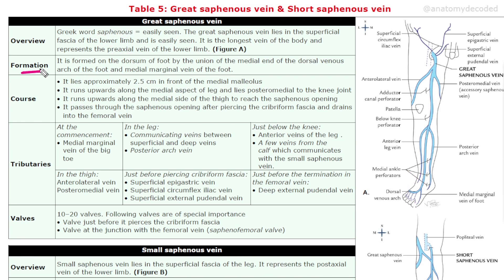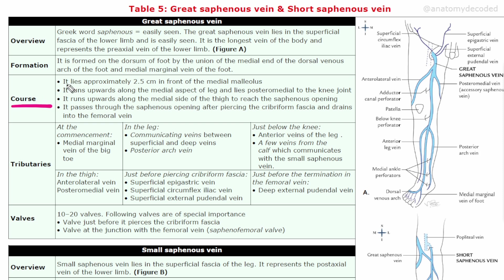The great saphenous vein is formed at the dorsum of the foot by the union of the medial end of the dorsal venous arch and the medial marginal vein of the foot, as seen in this diagram. Its course: it lies approximately 2.5 centimeters in front of the medial malleolus. It runs upwards along the medial aspect of the leg and lies posteromedial to the knee joint.